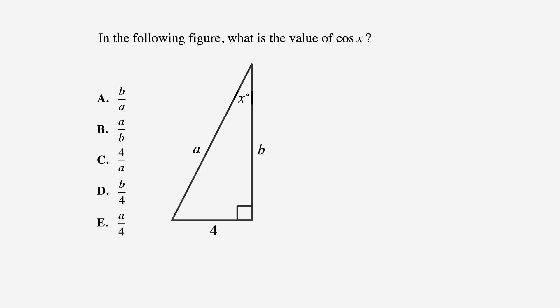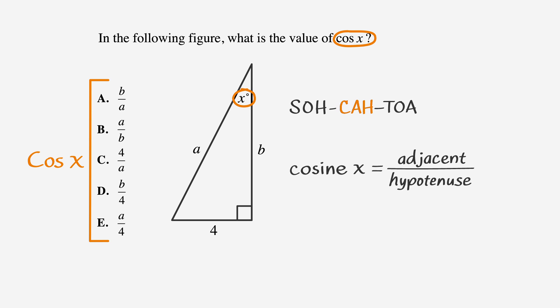Now that you've got the basics, let's solve an ACT problem that involves SOH-CAH-TOA. In the following figure, what is the value of cosine X? The answer choices represent the cosine of X. We'll circle the angle X in the drawing and write SOH-CAH-TOA next to the triangle, so we don't forget it. The cosine of X is adjacent over hypotenuse.